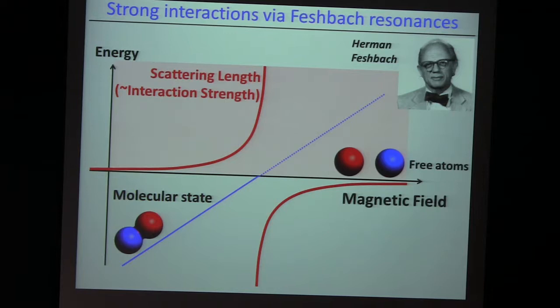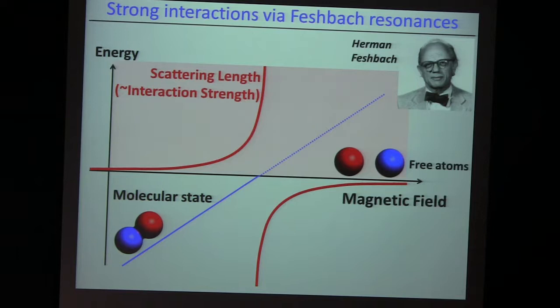The Feshbach resonance actually goes through the roof once you manage to bring a molecular state of the interparticle potential into resonance with the energy of two free atoms. Then your scattering becomes resonant and you can access this interesting physics of strongly interacting gases. One hidden requirement is that your gas remains stable when you do this. This is the case for a two-state mixture of fermions near resonance, because three-body collisions — which usually make your gas realize it wants to be a solid — are suppressed.